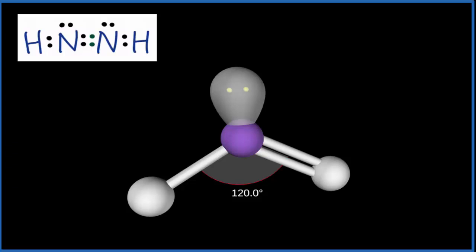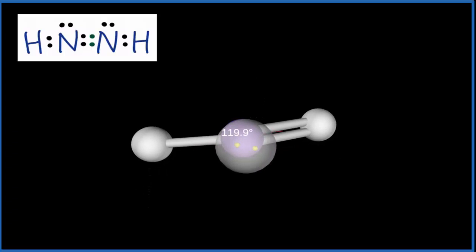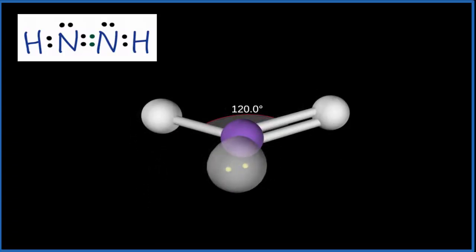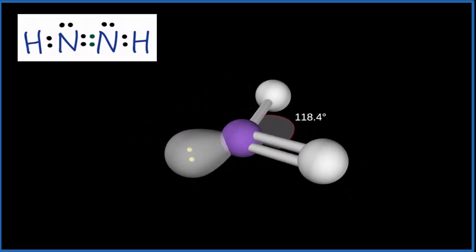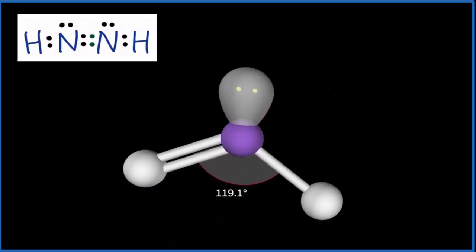And then we look at the lone pair, the hydrogen, then the other nitrogen and hydrogen. That gives us this trigonal planar electron geometry. So we have a trigonal planar electron geometry.